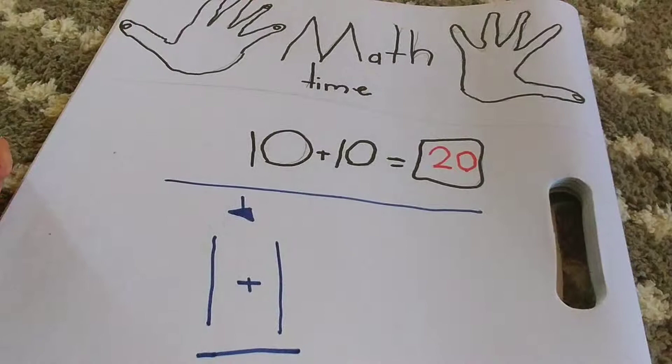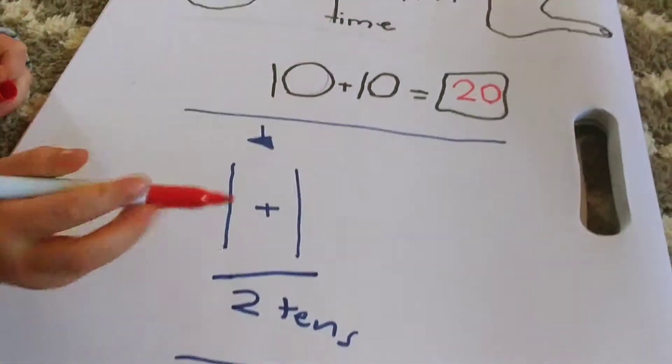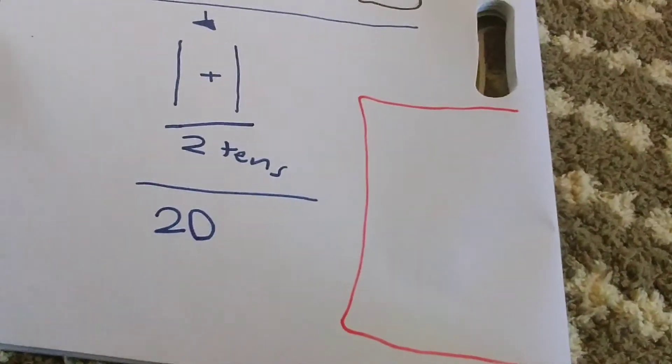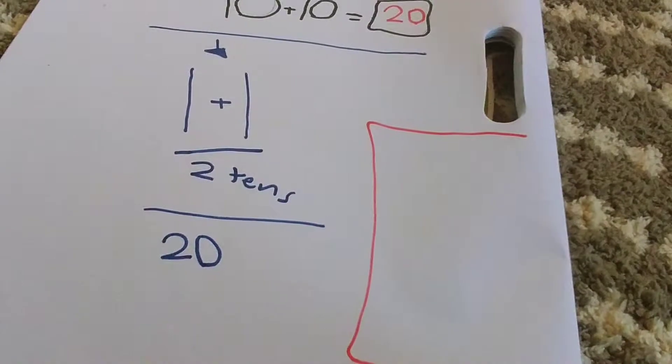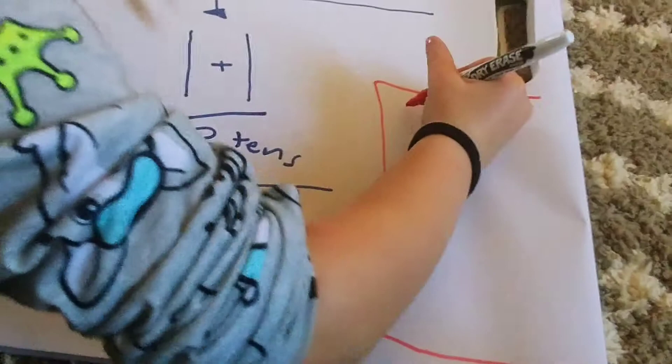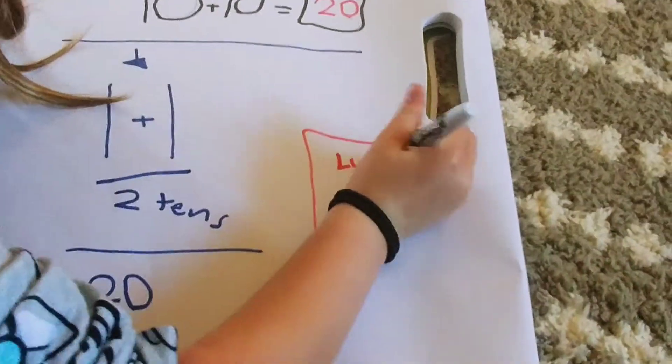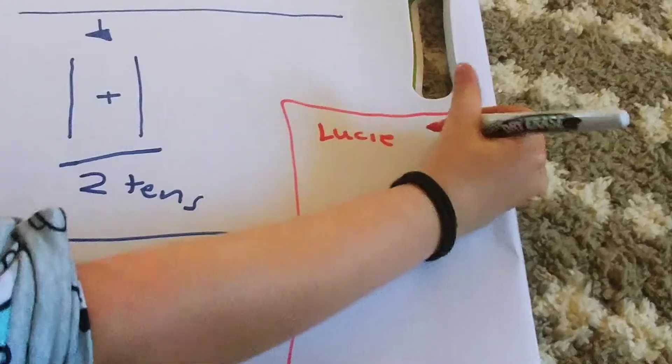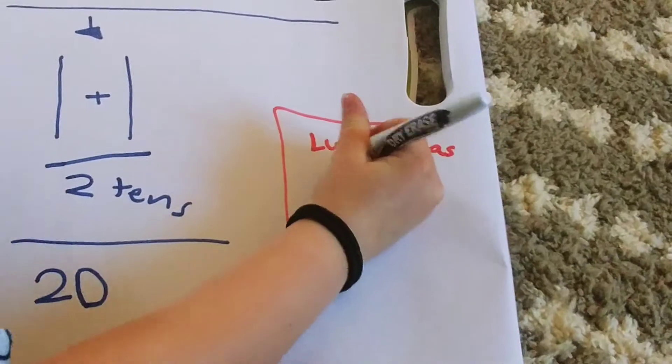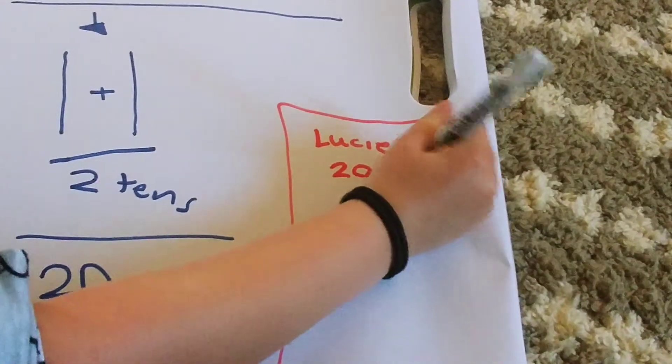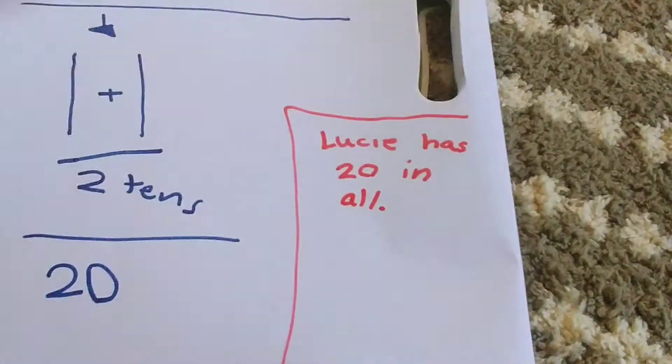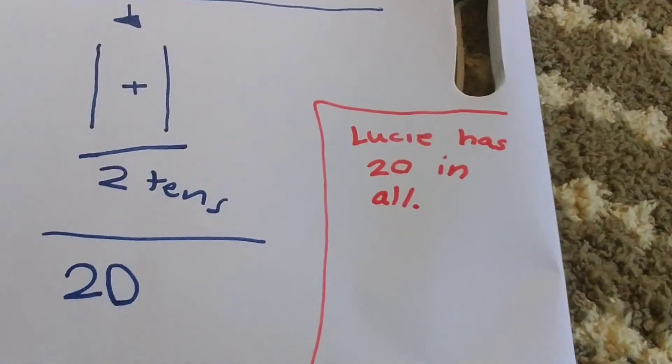One more thing, we need to write our math sentence. So what's our math sentence? It's going to be... hmm, what's her name going to be? Lucy. Lucy has 20. Thank you for learning with Math Time. Bye-bye!